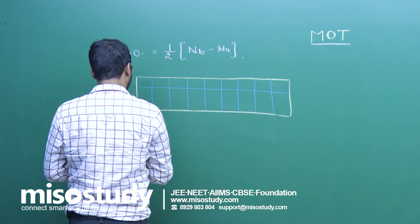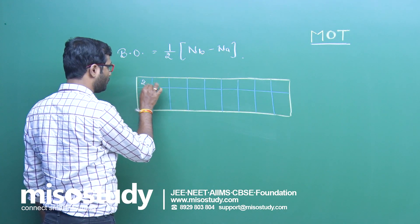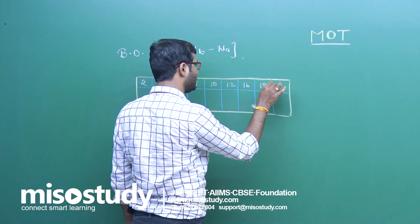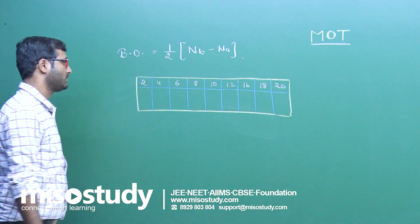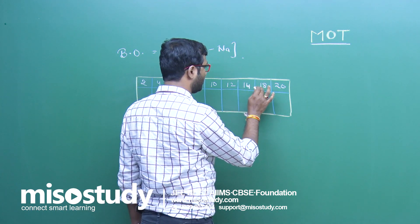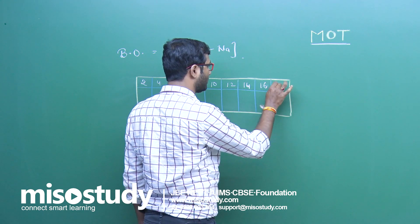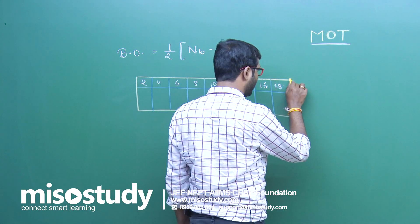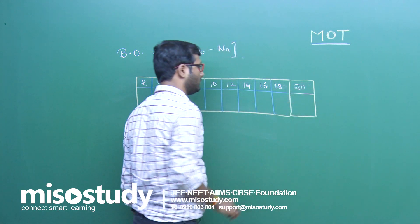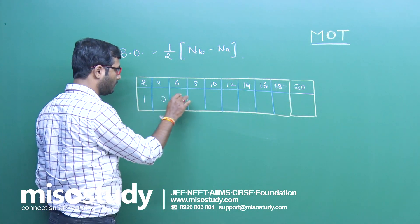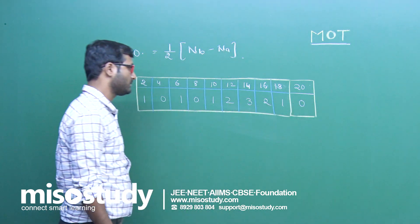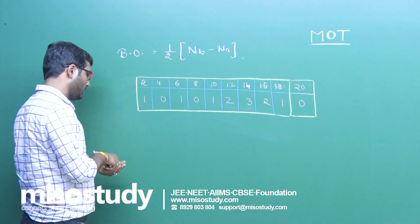Here we go. Put a table: 2, 4, 6, 8, 10, 12, 14, 16, 18, 20. Below that, put: 1, 0, 1, 0, 1, 2, 3, 2, 1, 0. You have to remember this table. It is very easy, and by using this method you can find the bond order easily without going through the full Molecular Orbital Theory.